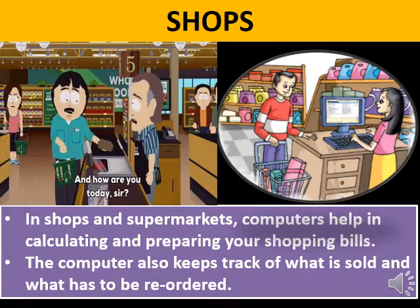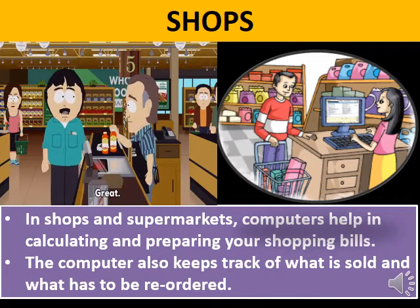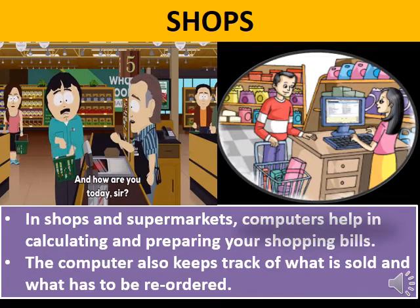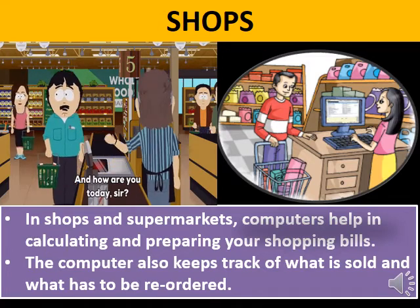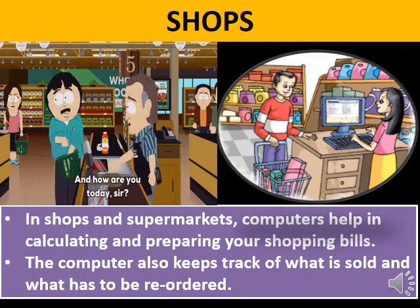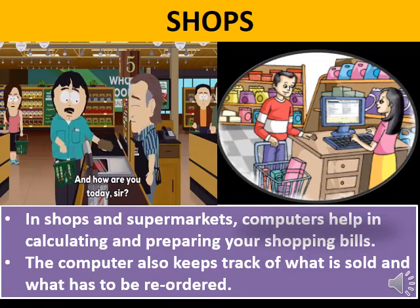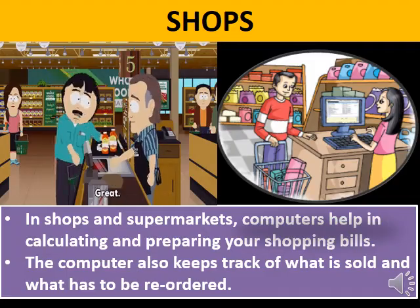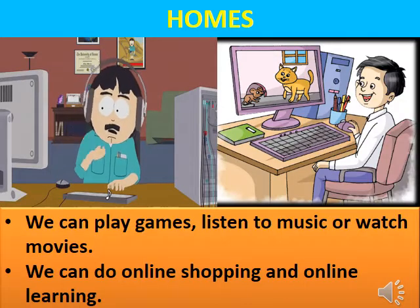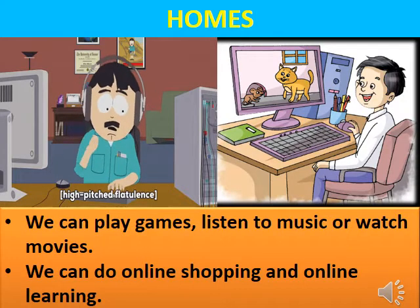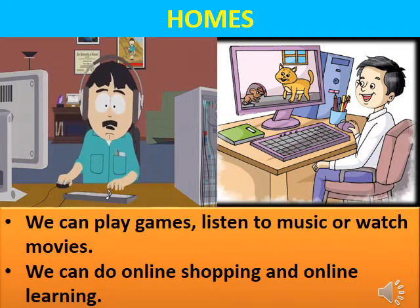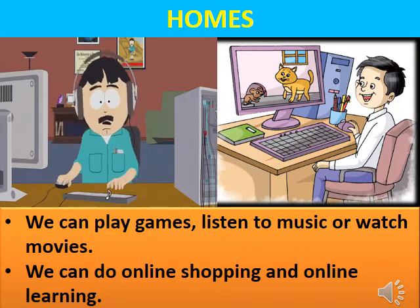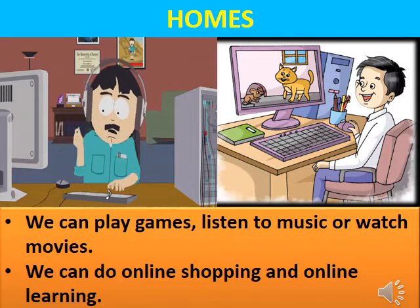The seventh application is shops. In shops and supermarkets, computers help in calculating and preparing shopping bills. The computer also keeps track of what is sold and what has to be reordered. The eighth application is homes: we can play games, listen to music, or watch movies. We can also do online shopping and online learning.